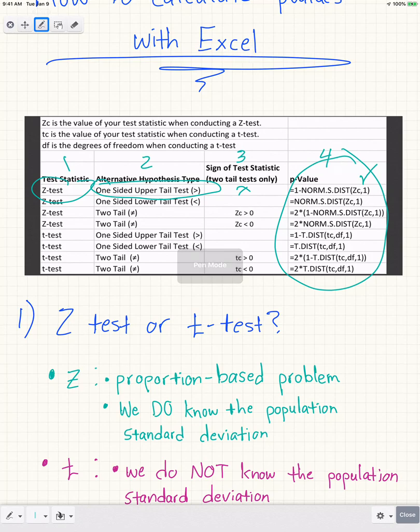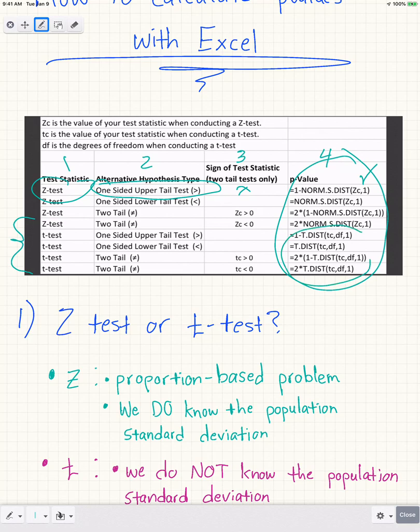For a T test, for one-sided upper-tail or lower-tail, we look at the Excel functions: T.DIST(tc, df), where tc is the T value you calculated, and df (degrees of freedom) is simply n minus 1. So the number of trials in your sample minus 1, you plug into that, and it gives you the p-value. I hope this chart helps you out.